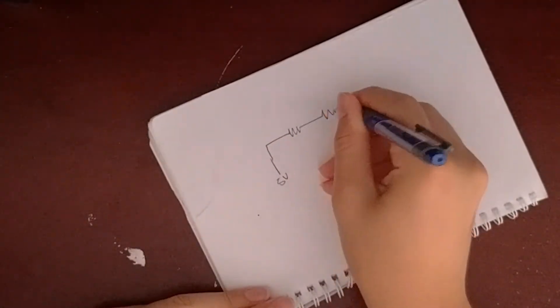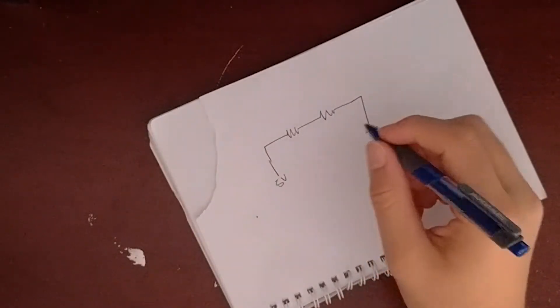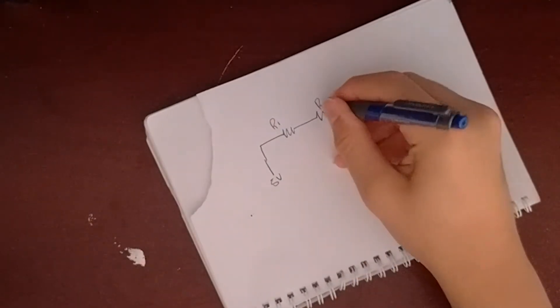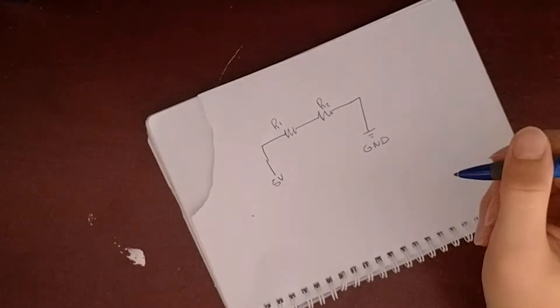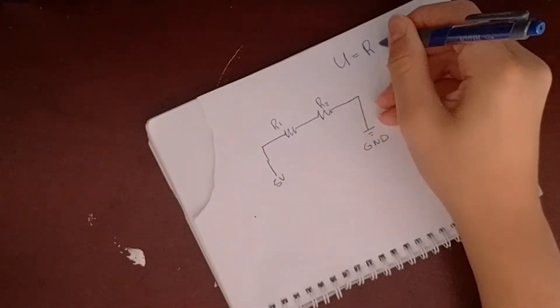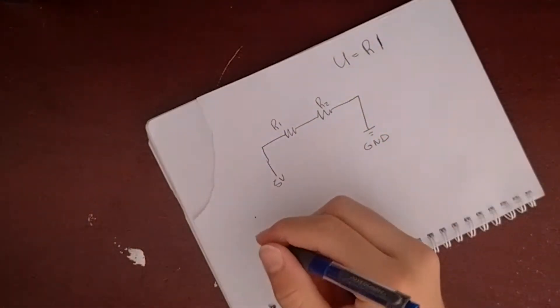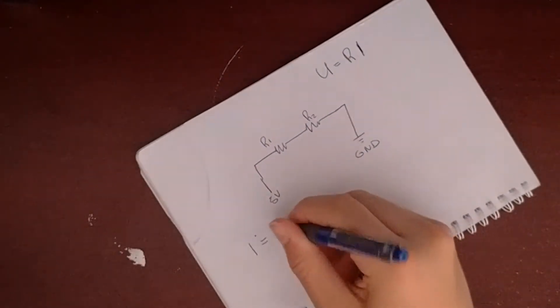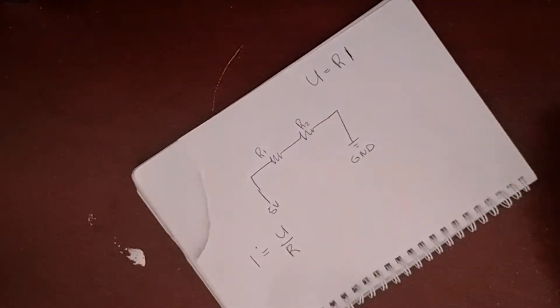In our circuit, R1 will be our chosen resistor and R2 will be the resistance of the thermistor. We will set up a voltage divider to get the value of R2. The current that goes through our circuit is equal to the voltage divided by the resistance.